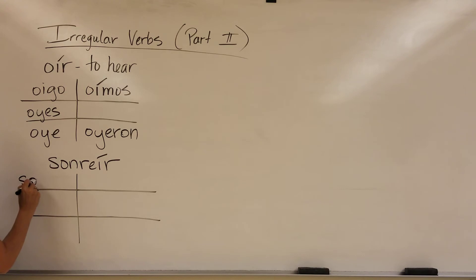So in the yo form, it is a stem-changing verb, so the e changes to an i with an accent, and then we put the yo form, which is an o. Sonrío, we do that to separate the sounds, just like we did here. We want those to have two separate sounds. Sonrío.